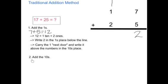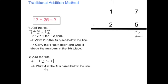Step 2 is to add the tens. In the tens place I have a 1, a 1, and a 2. So I'm going to add all of those together. 1 plus 1 plus 2 equals 4. I'm going to write 4 in the tens place below the line since I've added up all my tens.